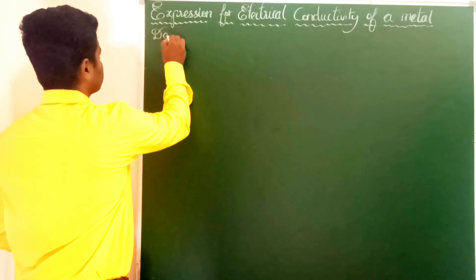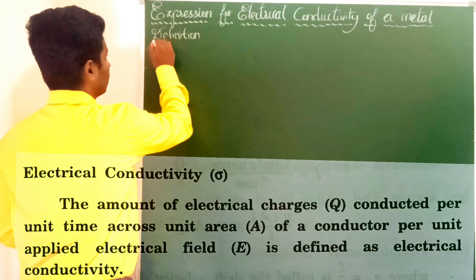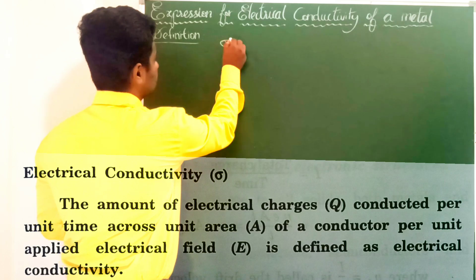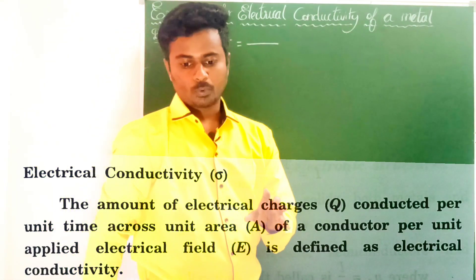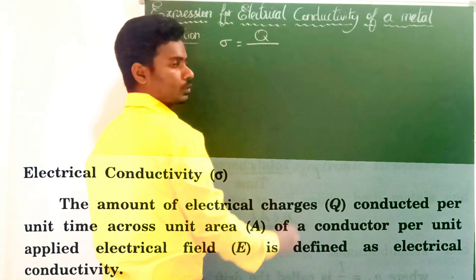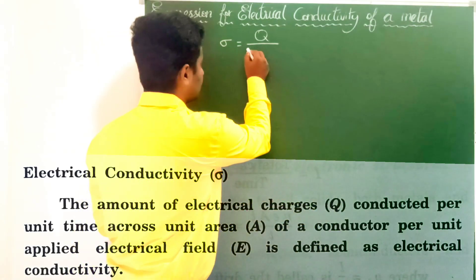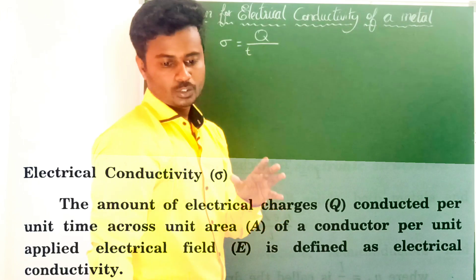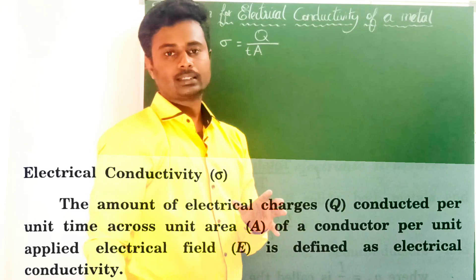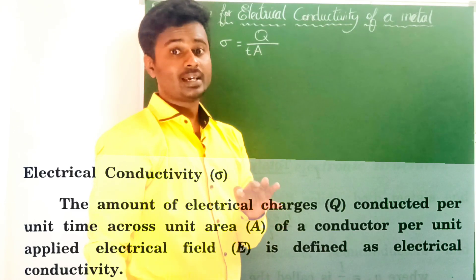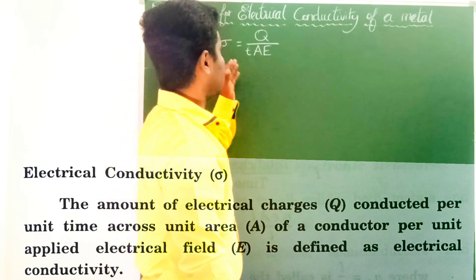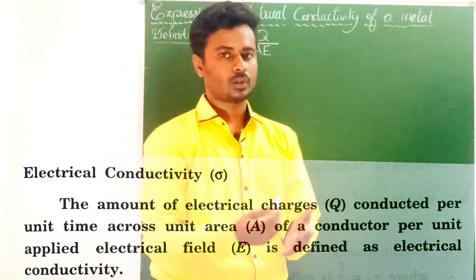Definition: electrical conductivity of a metal is defined as the amount of electrical charges Q conducted per unit time T, across unit area A, per unit applied electric field E. This is the formula.